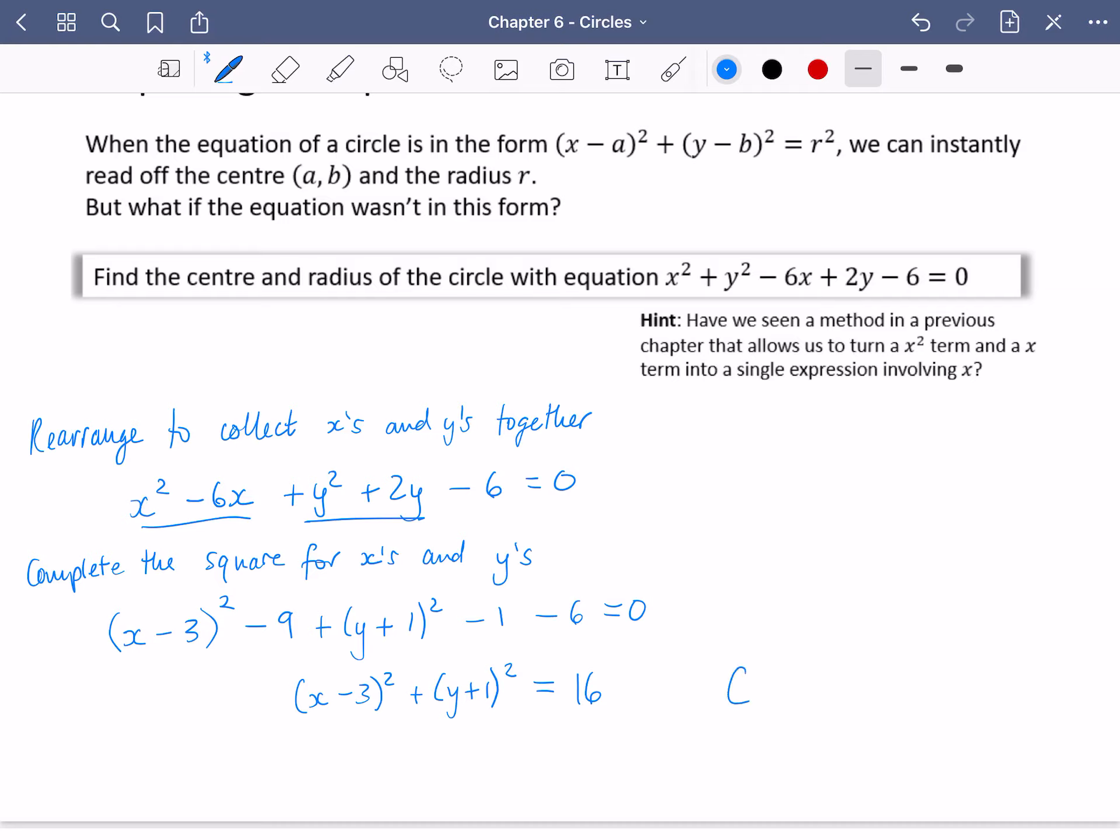So the center of this circle very clearly is (3, -1). And the radius, you could either write r or you could write radius as this. And the radius is equal to the square root of 16, which is 4. Okay, so we've got the center, we've got the radius, and we've definitely got that bit right there.